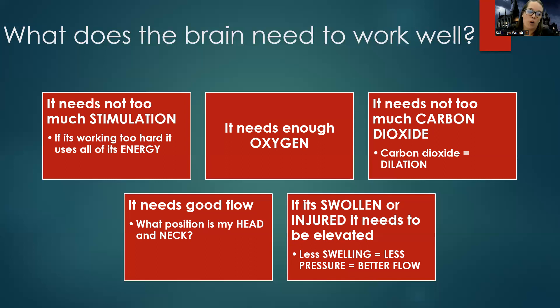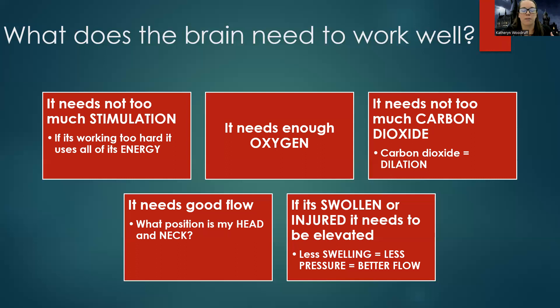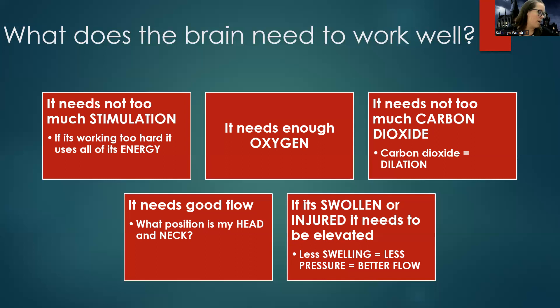I also need good flow, which means thinking about the position of my head and neck. I have arteries and veins helping get blood to and drain blood away from my brain. Anytime there's extreme turning or flexion, it's like kinking a hose — it leads to less flow. If I'm sitting upright with my neck neutral, it allows for good flow. When taking care of a neuro patient, I'll put towels by their head to keep it straight and allow for better brain flow overall.